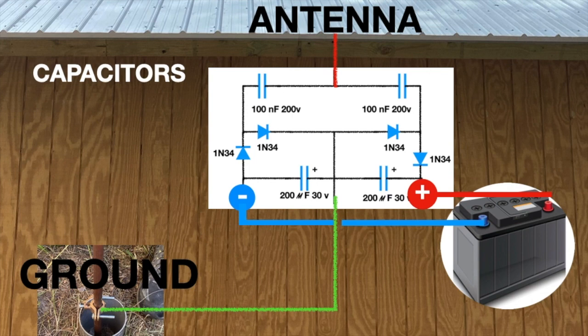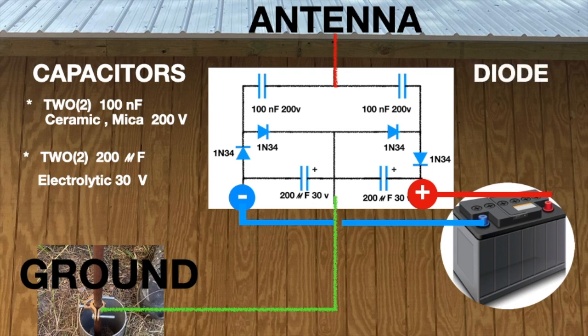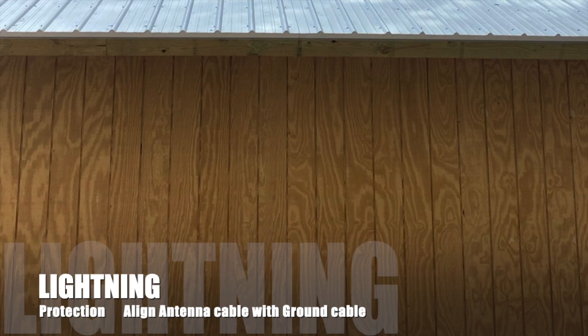With a good antenna, a good ground, two ceramic or mica 200-volt capacitors, or two 200-microfarad electrolytic 30-volt capacitors, you can build the circuit and charge your battery. By increasing the antenna size and the grounding and the capacitors that you use, you can increase the power.